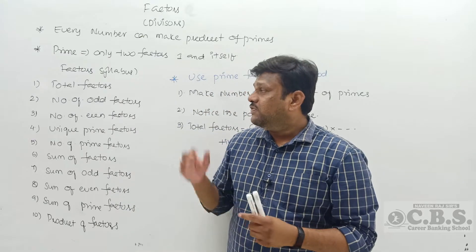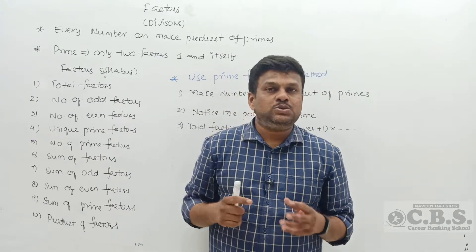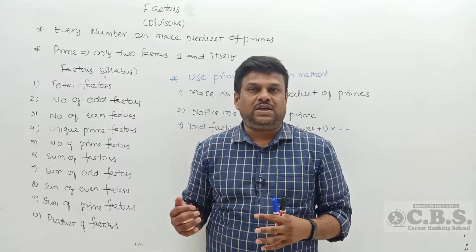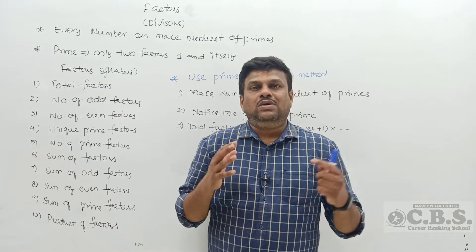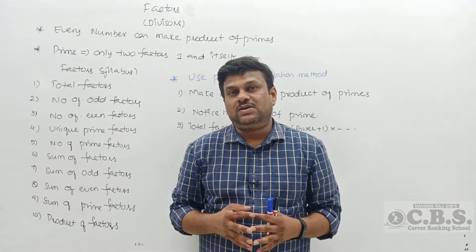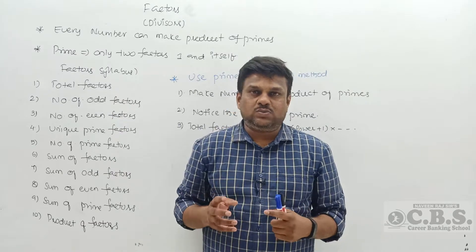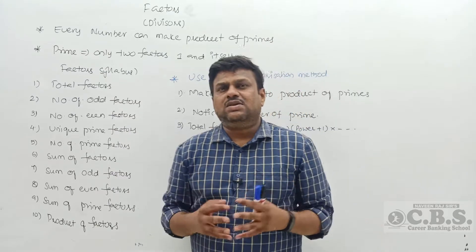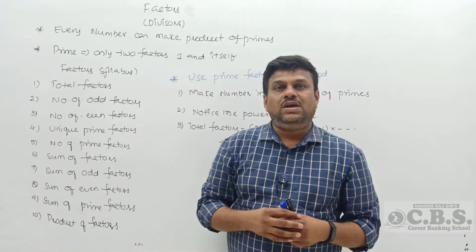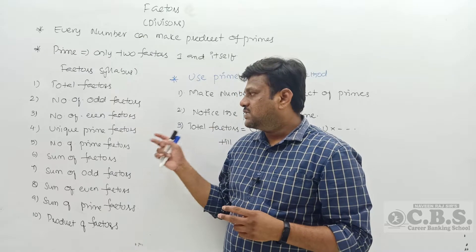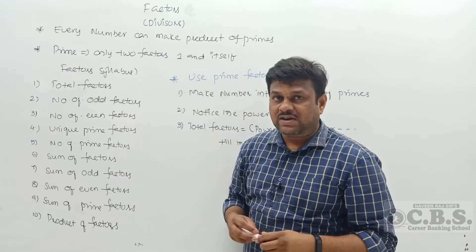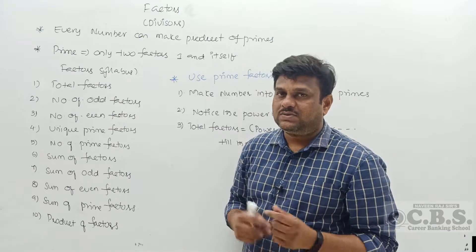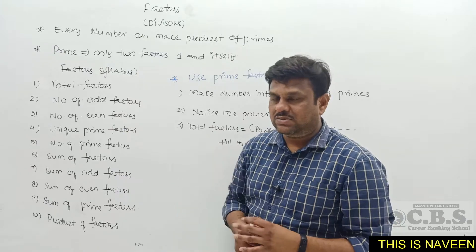I'm going to show you the syllabus of factors and how to find factors of a number. Factors are numbers used to make a larger number. Factors are categorized into two basic types: prime factors and composite factors. Composite factors are further categorized into odd factors and even factors. The sub-topics in factors are: total factors, number of odd factors, number of even factors, number of unique prime factors, number of prime factors, sum of factors, sum of odd factors, sum of even factors, sum of prime factors, and product of factors.